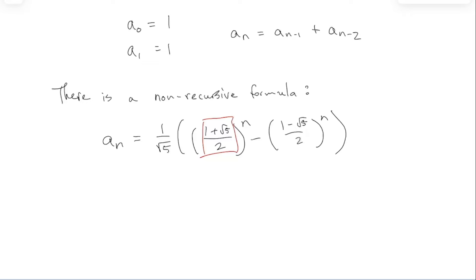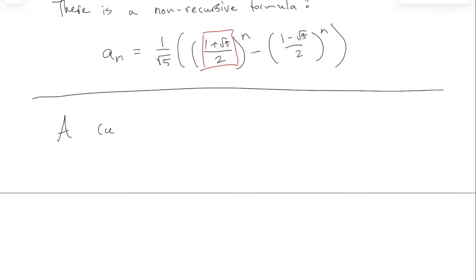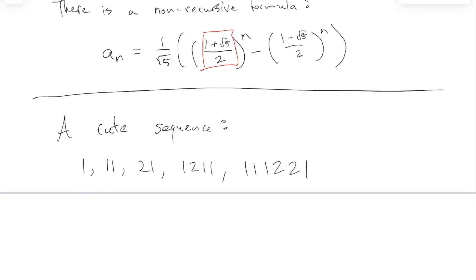I've got one more fun sequence. Here's another one — see if you recognize it: 1, 1, 1, 2, 1. The sequence is better thought of one digit at a time. The next term is 3, 1, 2, 2, 1, 1. Anybody see the pattern?